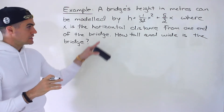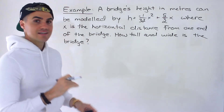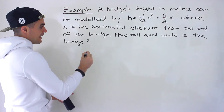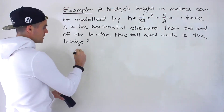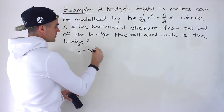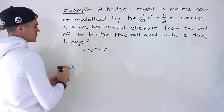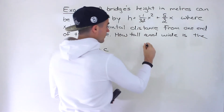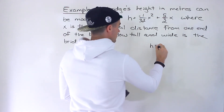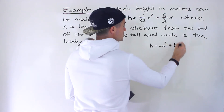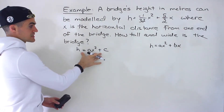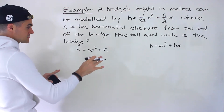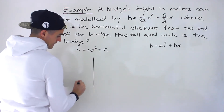It's the exact same question as the previous one — just the quadratic is given in a different format. In the previous video, the format was h = ax² + c, but notice that in this case the format is h = ax² + bx. There's no c value here, whereas in the previous scenario there was no bx term.